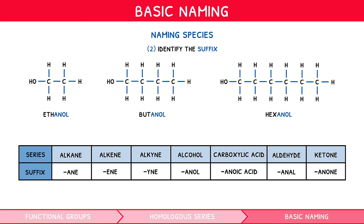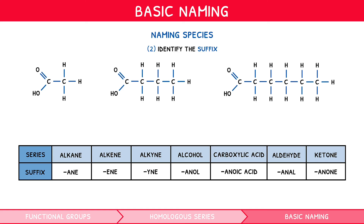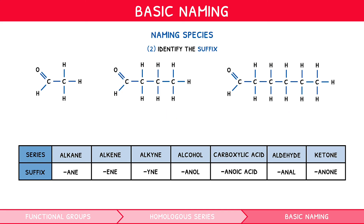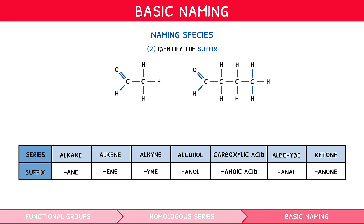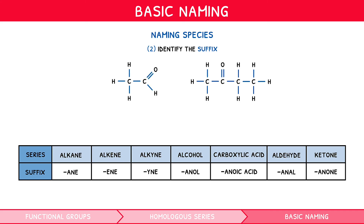If we converted them to carboxylic acids by switching the terminal CH3 group to a carboxyl group, i.e. COOH, they would be named ethanoic acid, butanoic acid, and hexanoic acid. If we converted them to aldehydes by switching a hydrogen on the terminal CH3 to a carbonyl group, i.e. making CHO, they would be named ethanal, butanal, and hexanal. Finally, if we converted just butane to a ketone by switching a hydrogen on the second carbon to a carbonyl group, it would be named butanone. Note we cannot create a ketone with ethane, as the carbonyl group cannot be present on the terminal carbon in a ketone.